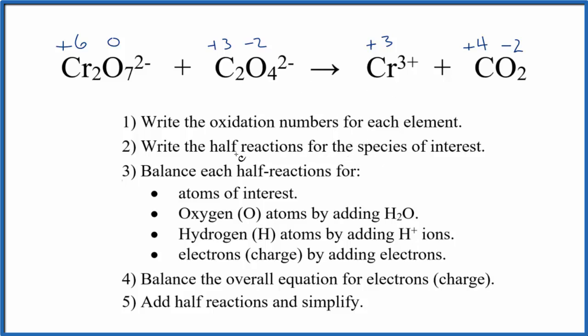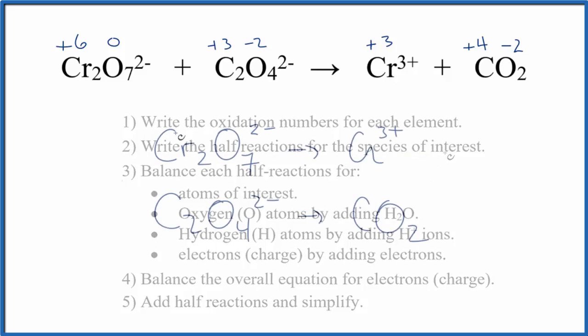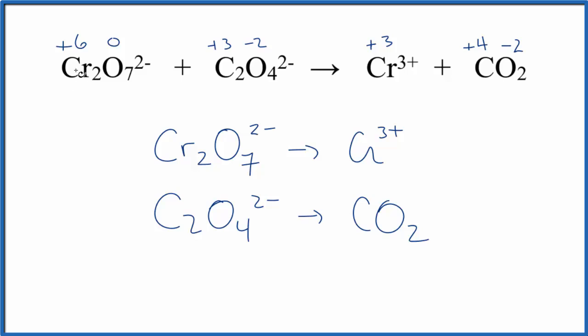Once we've done that, we want to write the half reactions for the species of interest. Those are the ones whose oxidation states have changed. So that'll look like this. We can see that the chromium changed and then the carbon changed, but the oxygen didn't. So these are the half reactions.